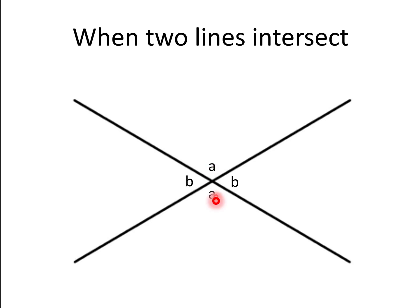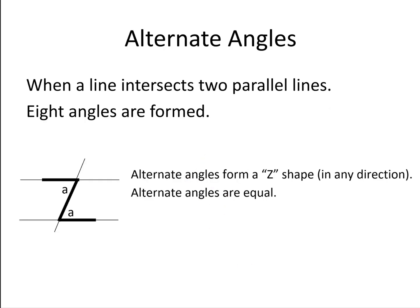Alternate angles: when a line intersects two parallel lines, eight angles are formed, and the alternate angles form a Z shape in any direction, and alternate angles are equal.